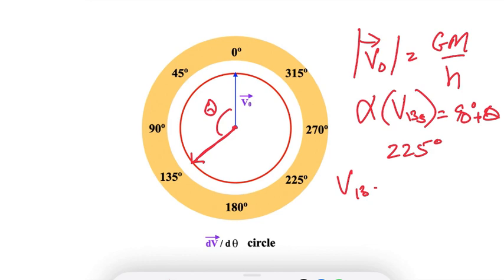So we know the angle of v₁₃₅, and we know its magnitude, which is GM over h.